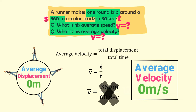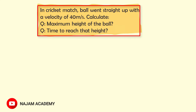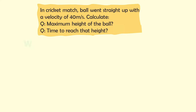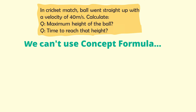The concept-formula technique has some limitations. For example, consider: in a cricket match, a ball went straight up with a velocity of 40 meters per second. Calculate the maximum height of the ball and the time to reach that height. Here we cannot use the concept-formula technique, and you will learn the reason.